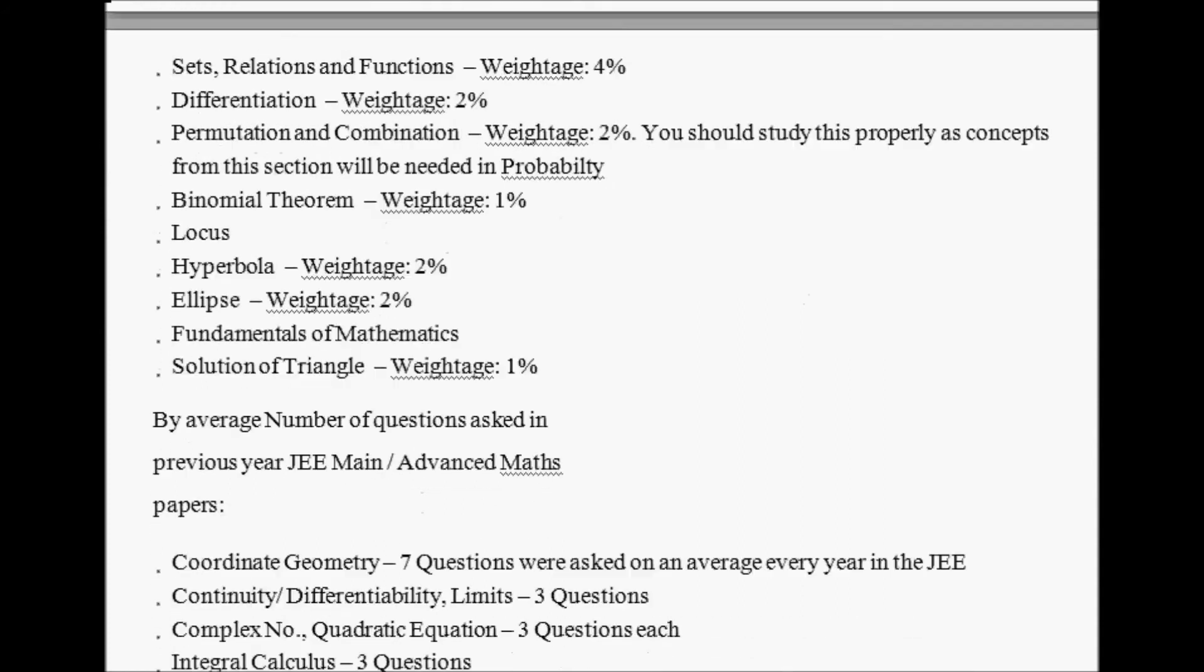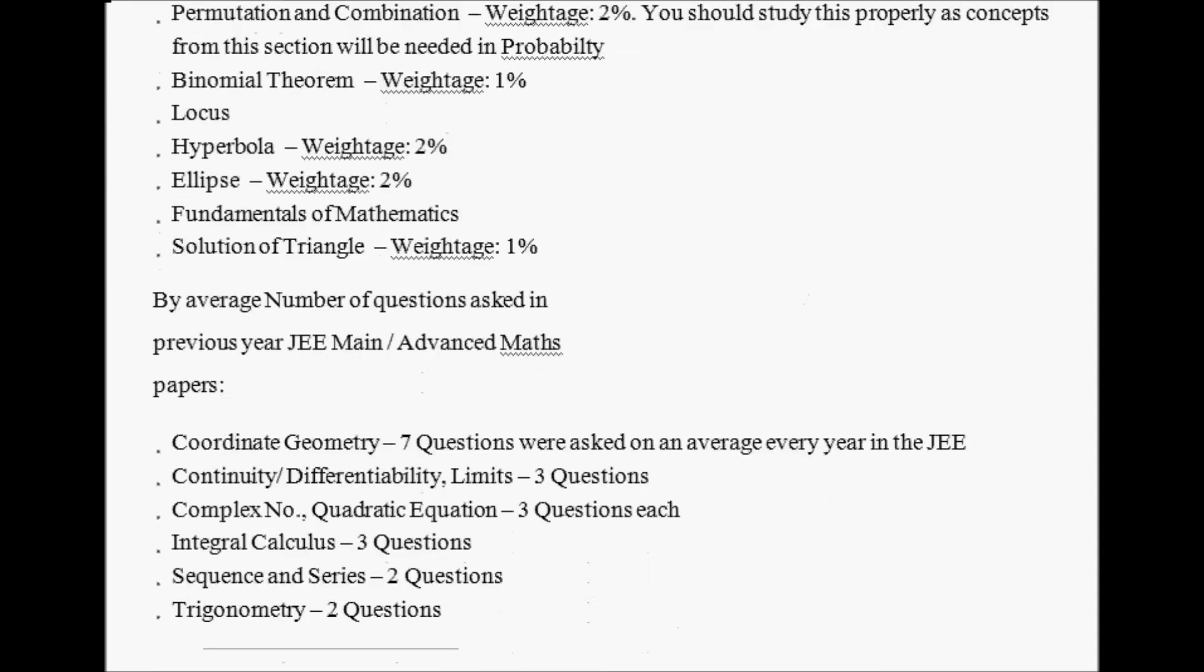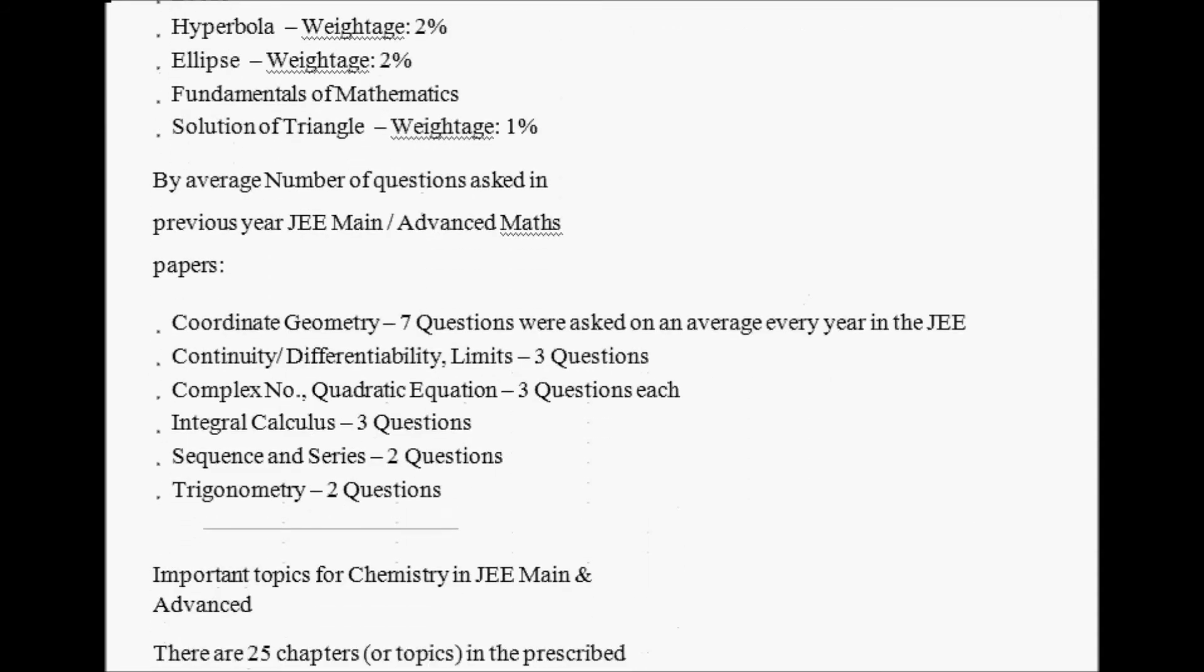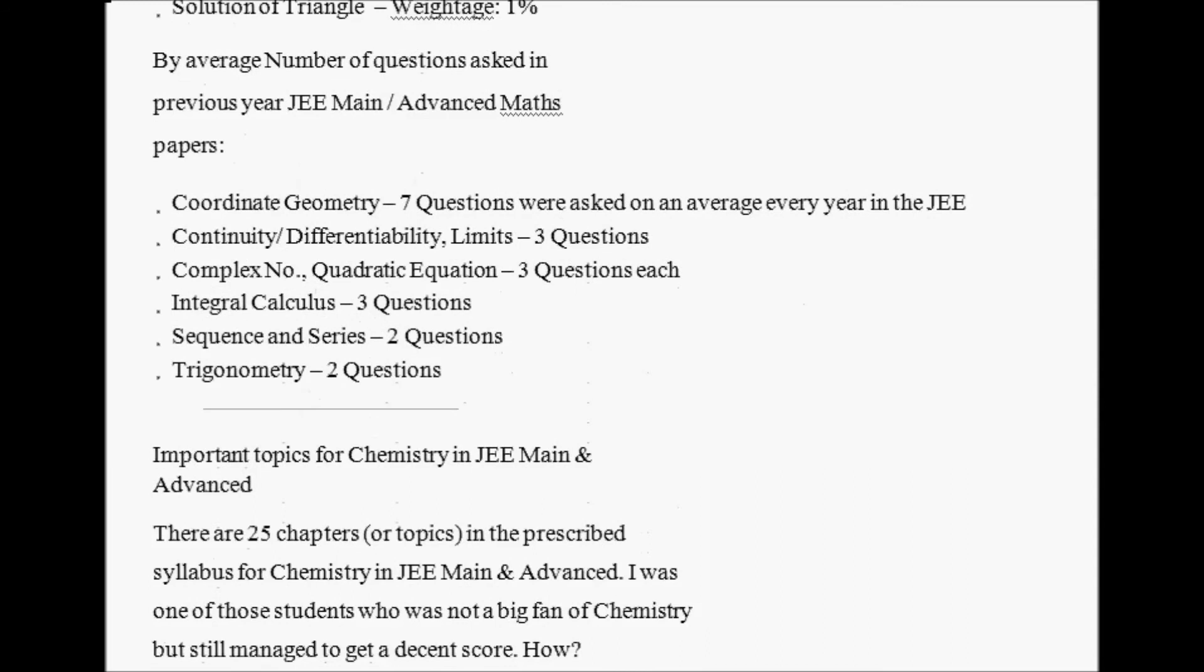The average number of questions asked in the previous JEE Mains Advanced mathematics papers: Coordinate Geometry - 4 or more questions were asked on average every year in JEE. Continuity, Differentiability, Limits - around 3 questions. Complex Numbers, Quadratic Equations - 3 questions each. Sequence and Series - 2 questions. Trigonometry - 2 questions.